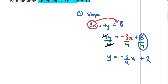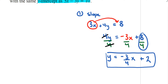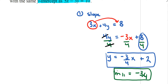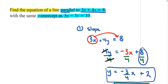If I'm looking for a line parallel to this line, the slopes need to be the same, so the slope of the parallel line will be negative 3 over 4. Let's box that — we'll definitely need that later.